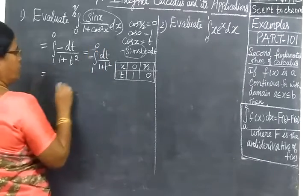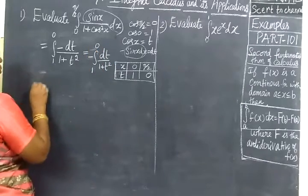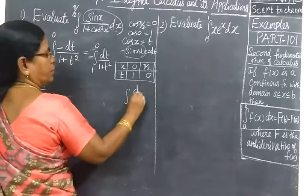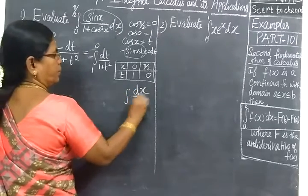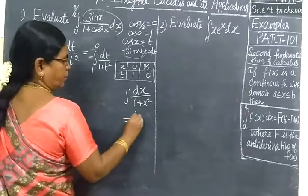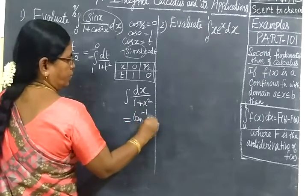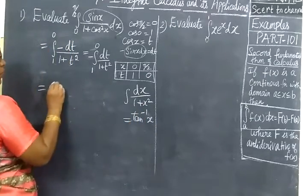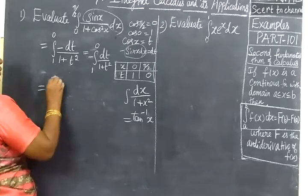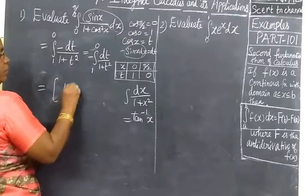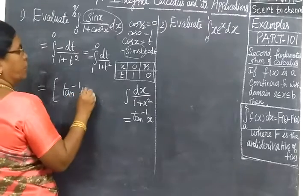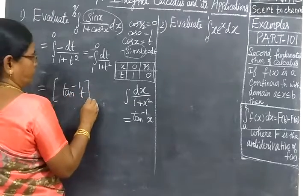Limit is 1 to 0. We know the formula: the integral of ds divided by (1 plus x squared) equals tan inverse of x. So applying that formula here, we get tan inverse of t with limits 1 to 0.